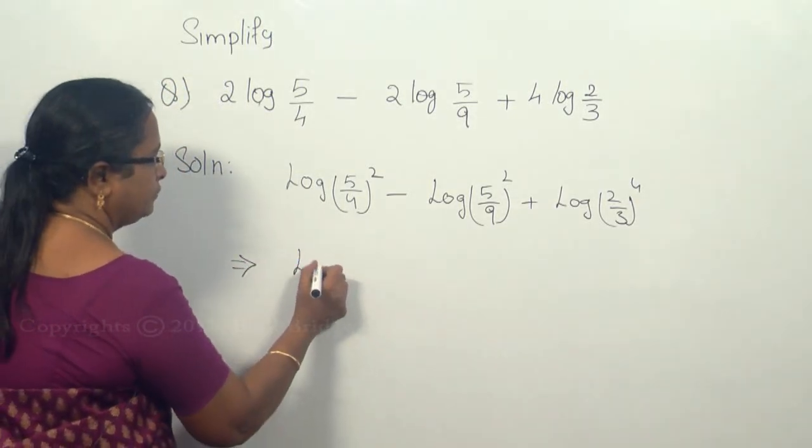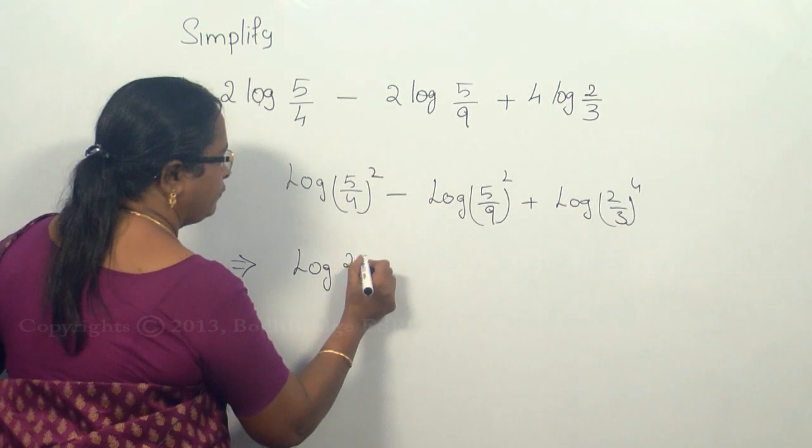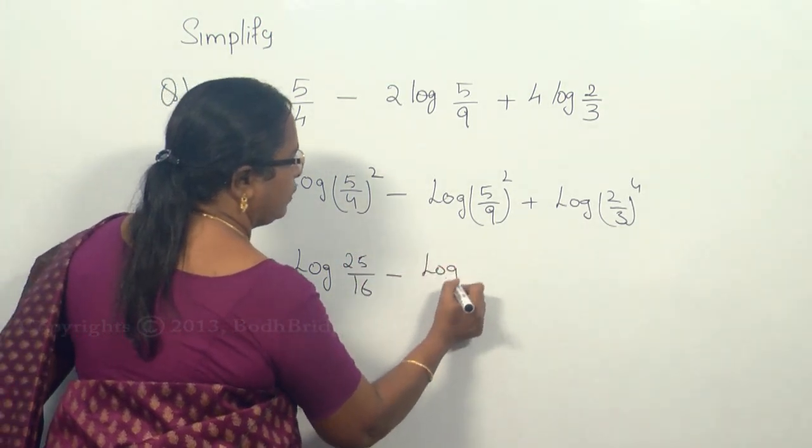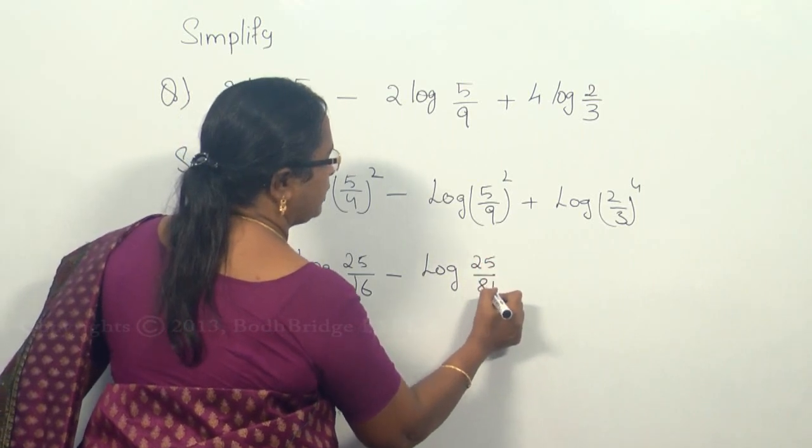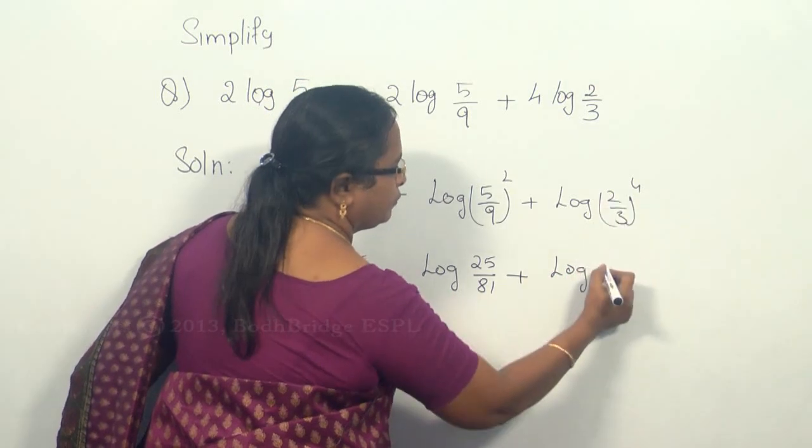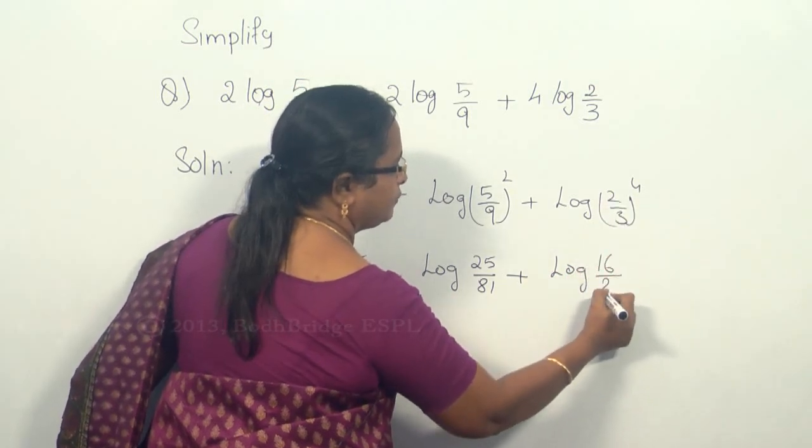So this is log of 25/16 minus log of 25/81 plus log of 2 power 4 is 16 divided by 3 power 4 is 81.